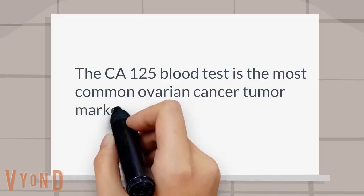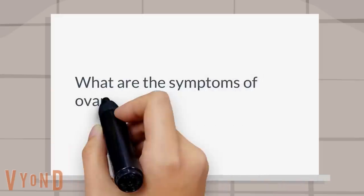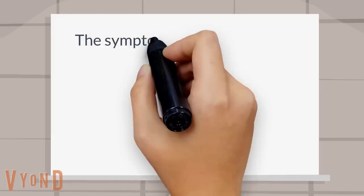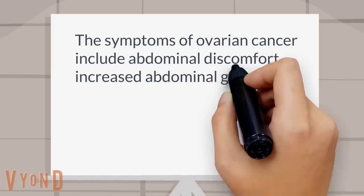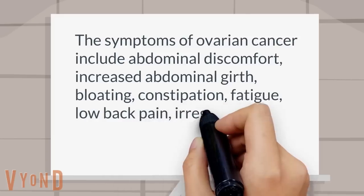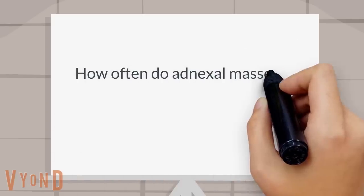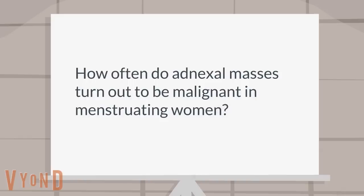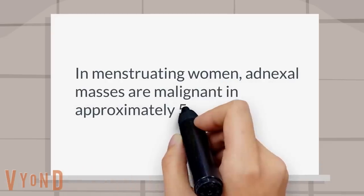What is a common ovarian cancer tumor marker? The CA-125 blood test is the most common ovarian cancer tumor marker. What are the symptoms of ovarian cancer? The symptoms of ovarian cancer include abdominal discomfort, increased abdominal girth, bloating, constipation, fatigue, low back pain, irregular menstrual cycles, and dyspareunia.